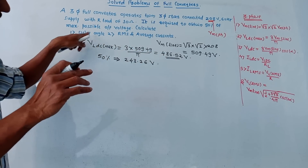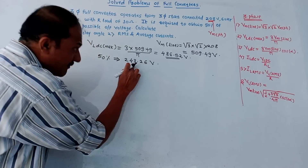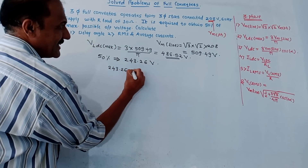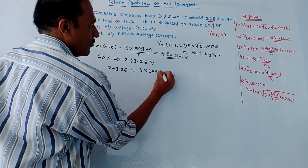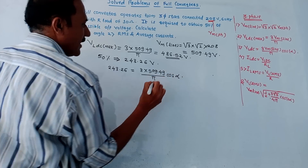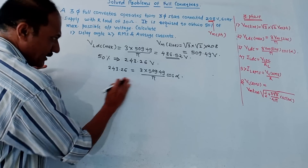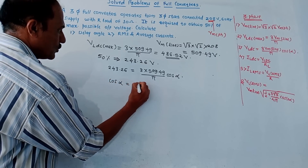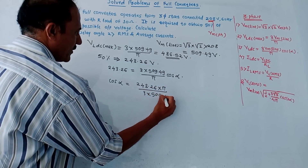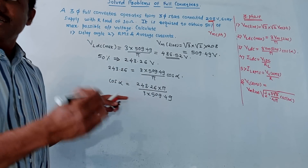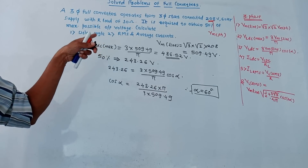Now let us calculate the delay angle alpha. Using the formula Vldc = 3 × Vm_line / π × cos α: 243.26 = 3 × 509.49 / π × cos α. Solving: cos α = 243.26 × π / (3 × 509.49). Therefore, alpha equals 60 degrees. This is the answer of the first part — the delay angle.